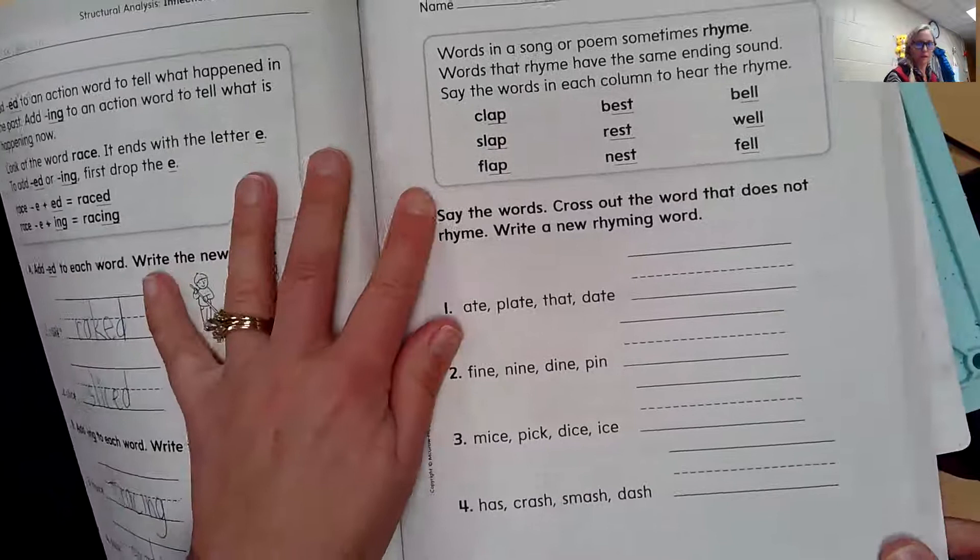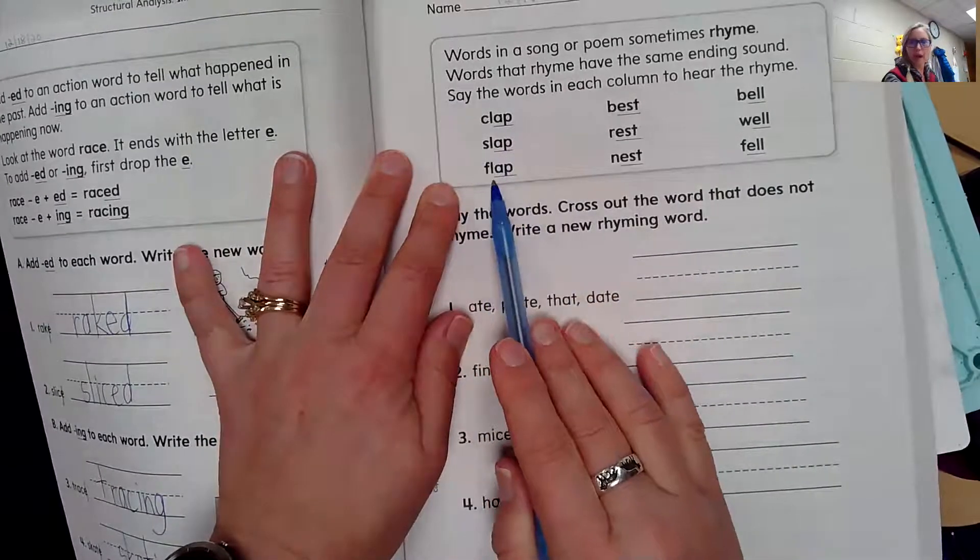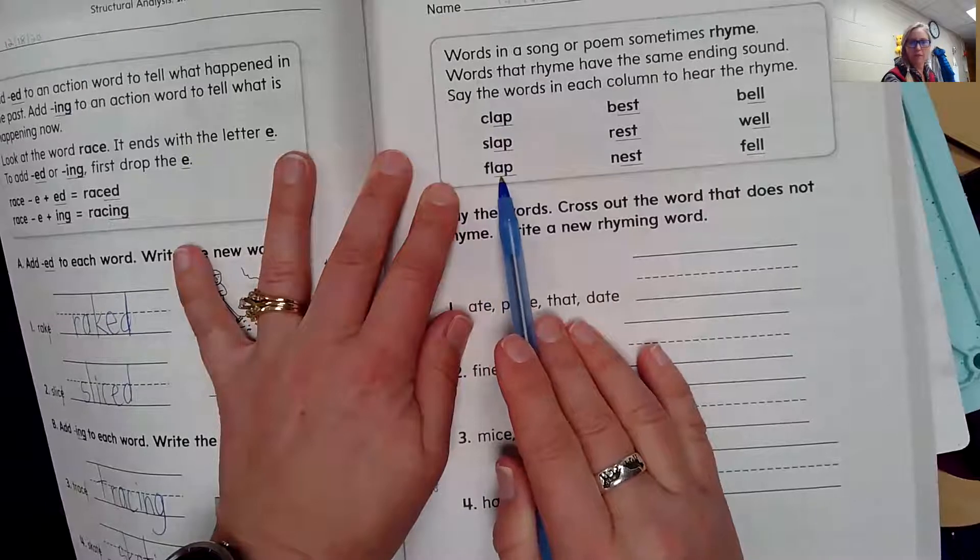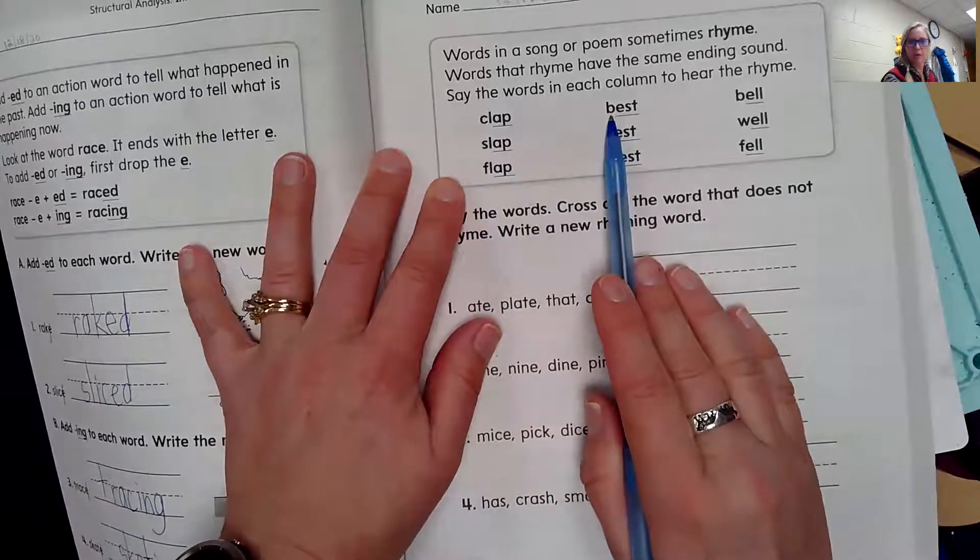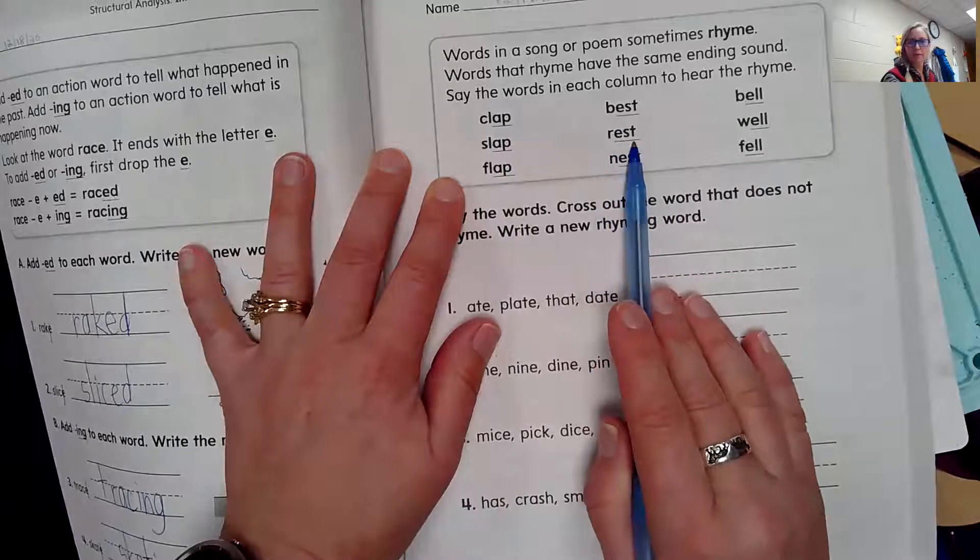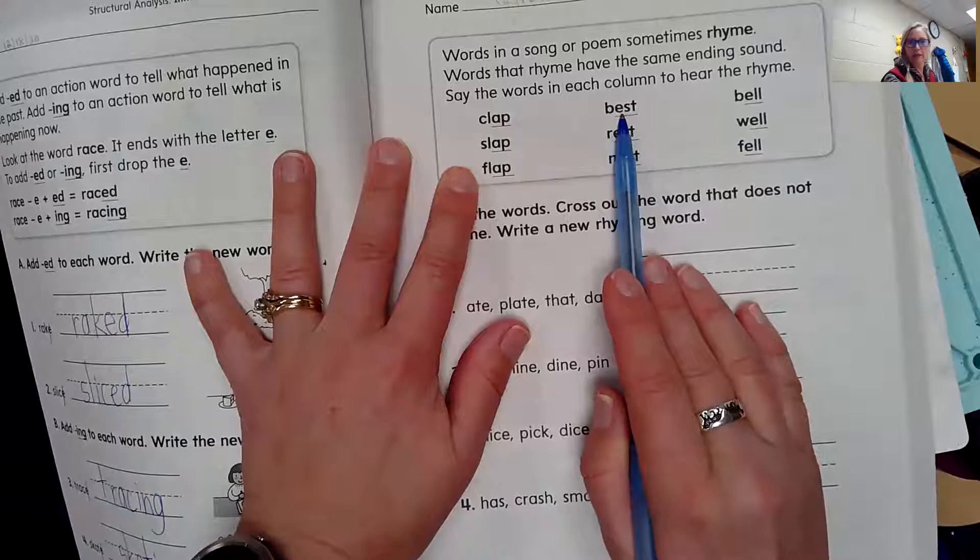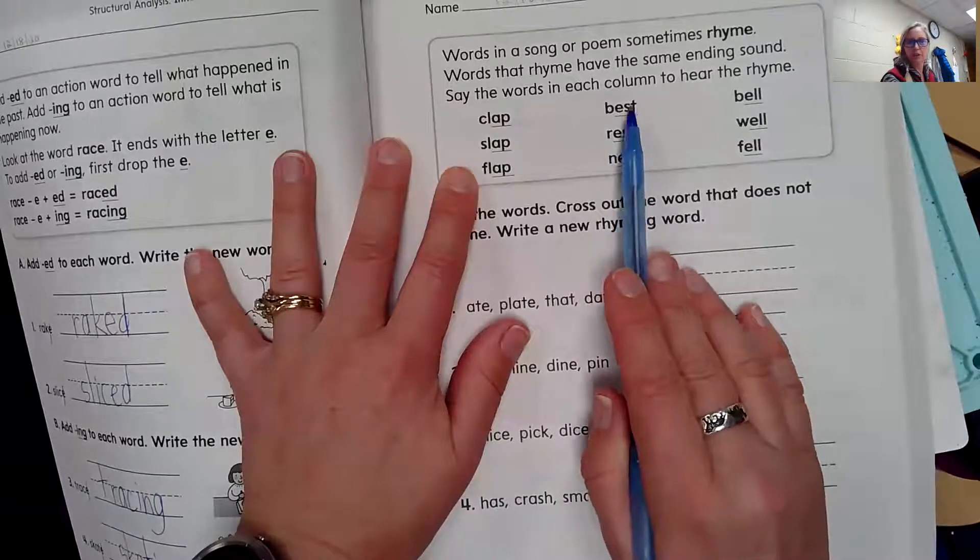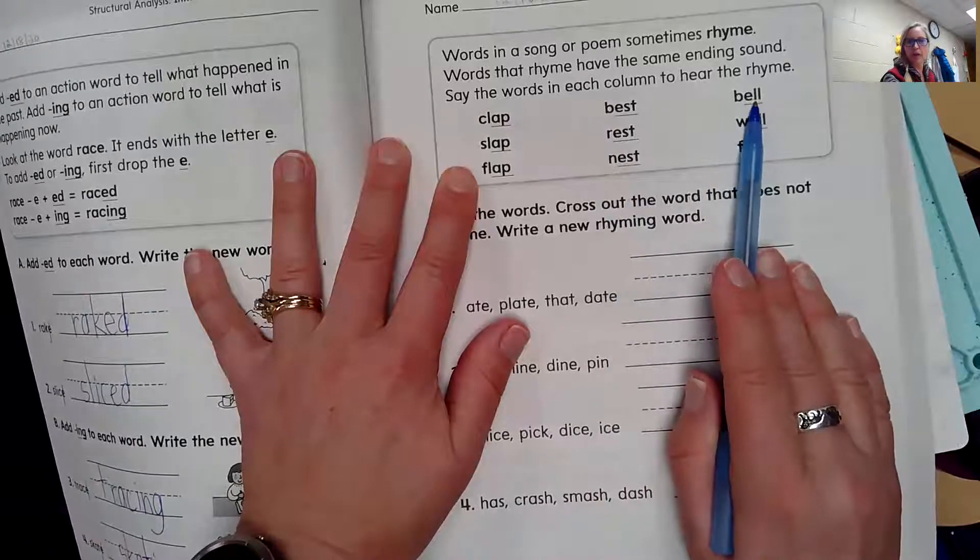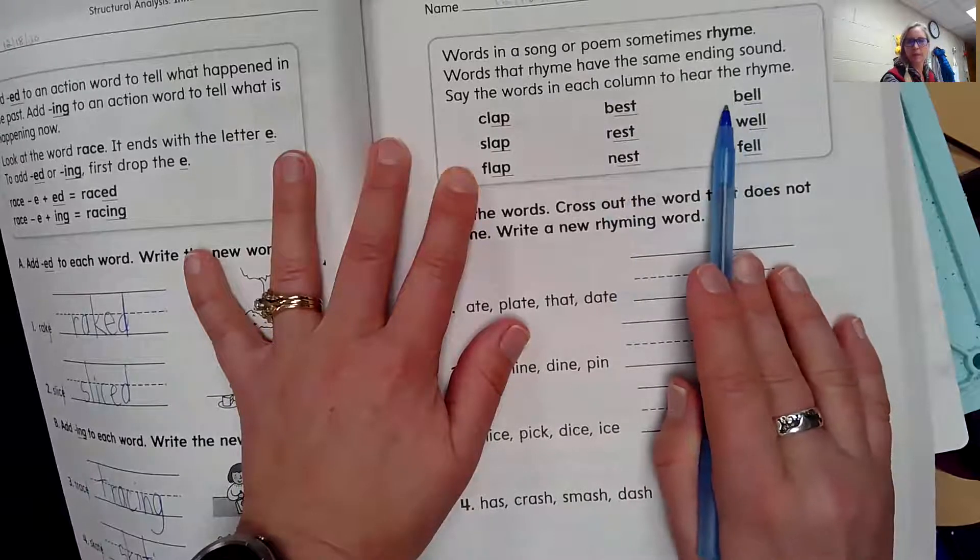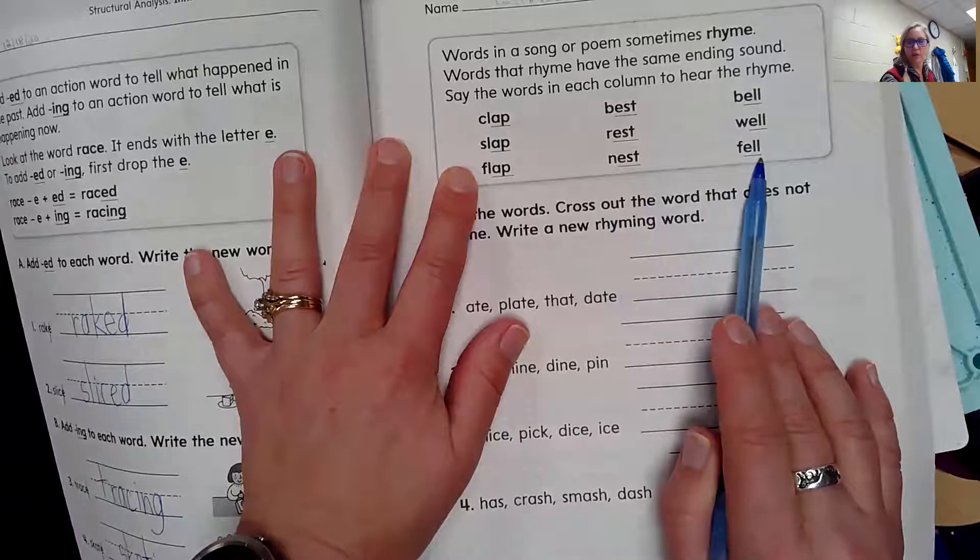We've got the vowel plus the consonant at the end to make the rhyme. So we've got clap, slap, flap. They all rhyme because they have 'ap' at the end. Let's look over here. We have best, rest, nest. They all rhyme because they end with the sound 'est'. They just changed the beginning sound. Let's look over here. We have bell, well, fell. All of those words rhyme.